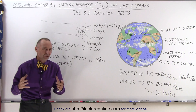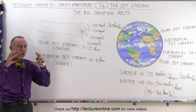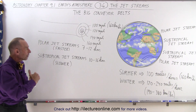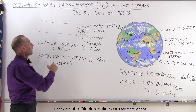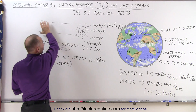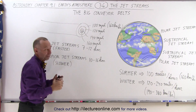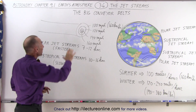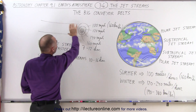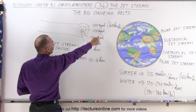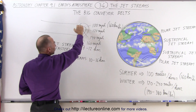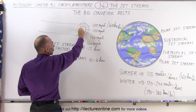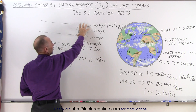Now what are jet streams? Well, jet streams are huge tubes of air that are quite a few kilometers up in the troposphere. You can see here a primitive drawing of one of those tubes of air, and notice that the wind speeds in those tubes are fairly large. The wind speed increases as you get closer to the center of the tube and decreases as you go further out to the edges of the tube.